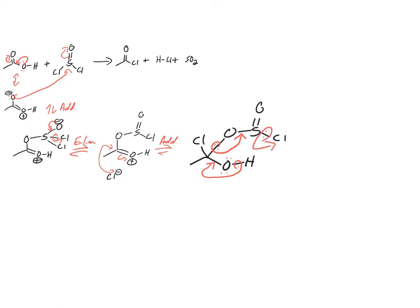So watch what happens here. I'm going to circle this H. All right, so see what happens here. So this was another elimination and deprotonation. So we end up with our acid chloride.